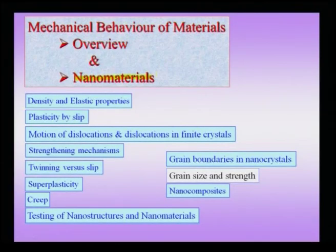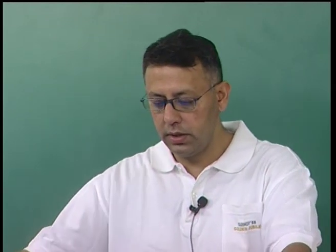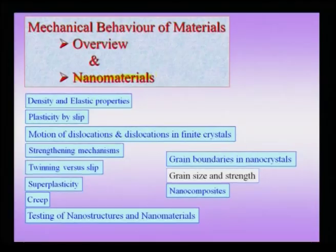In the discussion of mechanical behavior of materials, we will take up an overview of some of the properties, how they arise, the mechanisms behind these properties, and further we will discuss how these properties change when we go from the bulk to nano materials or nano structured materials. We will also take up issues regarding artifacts in testing and try to describe how we can develop better strategies of testing materials and also come up with properties which are specifically peculiar to nano materials.